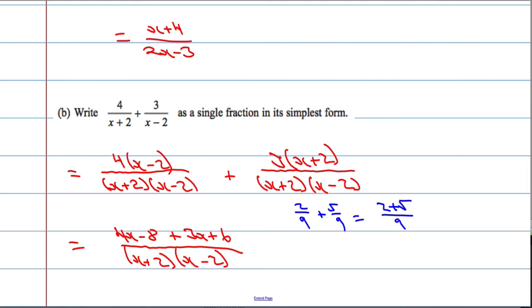And then final part, collecting our like terms together above and below. So 4x plus 3x, 7x minus 8 plus 6 is minus 2. So you get 7x minus 2 over x plus 2 times x minus 2. And that's it. Job done.